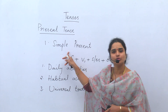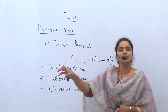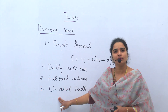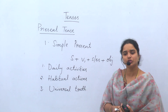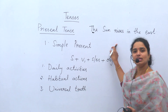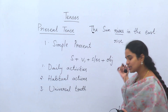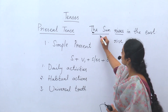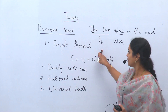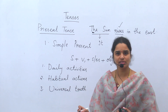Habits we express using simple present tense. And the third usage is universal truth — universally existing things which happen in the same manner without any disturbance, such things are called universal truth. For example, the sentence our teachers told us in school: 'The sun rises in the east.' Why can't we use 'rise'? Because the sun — how do we consider it? We consider it as 'it', so third person — compulsorily use plural form with S or ES.